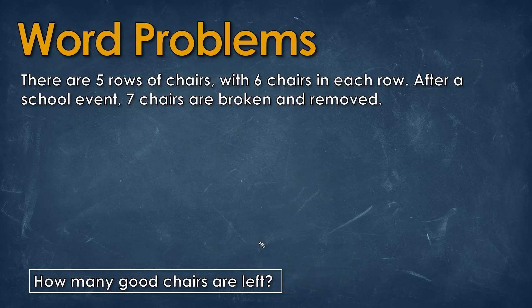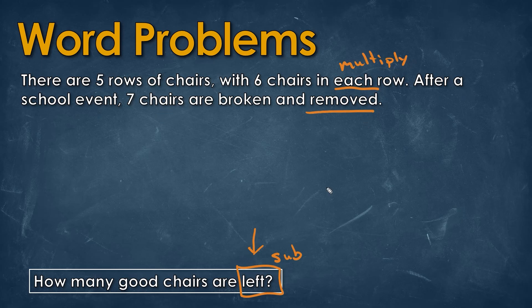The next question asks how many chairs are left. The word 'left' tells us we'll be doing subtraction. Looking at the question, we see 'each,' which usually means multiplication. Reading the word problem: there are five rows of chairs with six chairs in each row. After a school event, seven chairs are broken and removed. We multiply five by six to get 30.